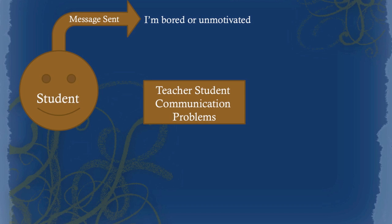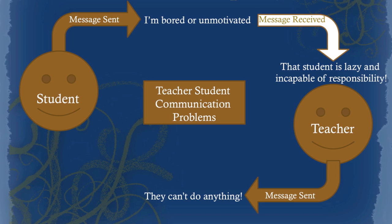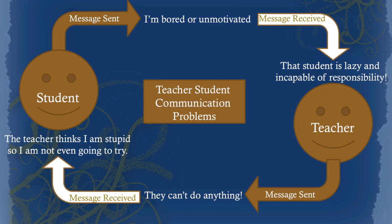While apathy has many causes, one of the main causes that can keep apathy growing are communication problems between students and teachers. Students send the message that they're bored or unmotivated, but the teacher receives that as the student being lazy and incapable of responsibility. The teacher then sends the message that students can't do anything, and students receive that as 'the teacher thinks I'm stupid, so I'm not going to even try.' This is a cyclical process.